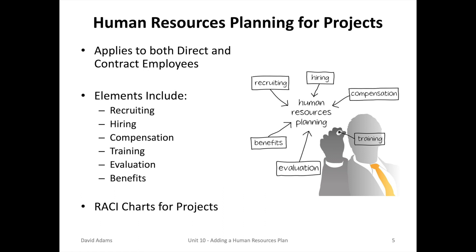Let's look at some of the details of human resources planning for projects. First of all, it applies to both direct and contract employees. The plan itself includes recruiting, hiring, compensation, training, evaluation, and benefits. And the last part, which is project specific, is developing a RACI chart.